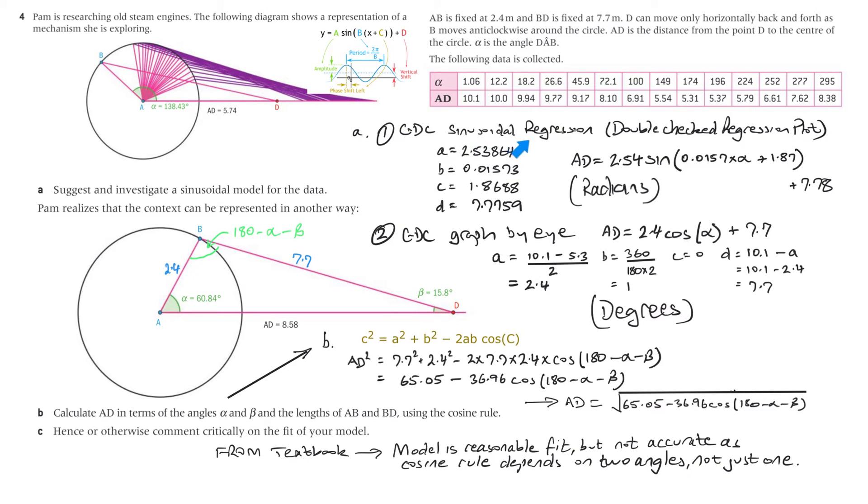I did this two ways. First I did the GDC sinusoidal regression and I got these numbers here. So I put that in as a table and then I went to menu and I chose sinusoidal regression and I got those. Now this is of the form A times sine times B times X, in our case it's alpha, plus C. That's our C. This is what the calculator outputs plus D and D is the vertical shift. Now that's different from what we've got here which is B outside of X plus C. So the calculator output's different. Also it's in radians. And then if we put those numbers in we get 2.54 sine 0.0157 times alpha plus 1.87 and then plus 7.78 the vertical shift. And so that's what we got.